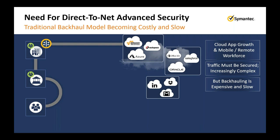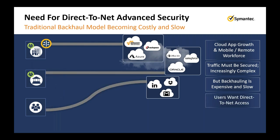With the proliferation of cloud app adoption and large mobile workforces, it's becoming increasingly complicated to secure traffic from the typical on-premise network security stack. Backhauling remote roaming users into that traditional security stack and connectivity model is becoming more expensive and quite slow. Those roaming users want speed of access — direct-to-net — without having to go through corporate headquarters to access their internet applications.